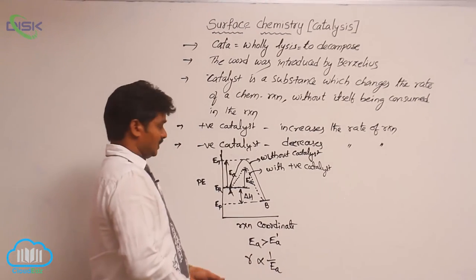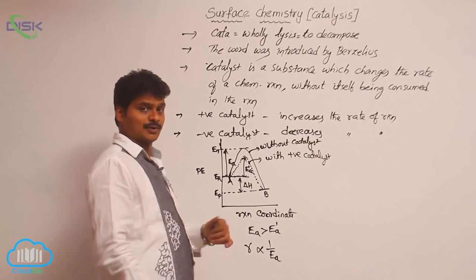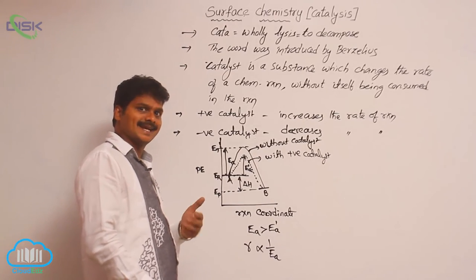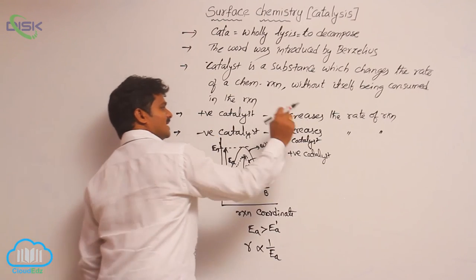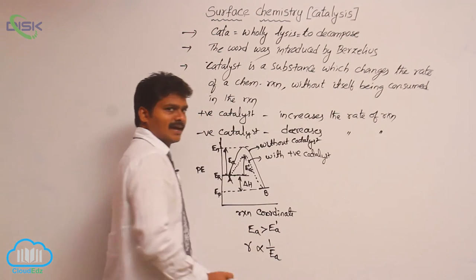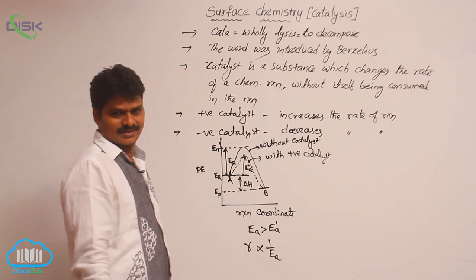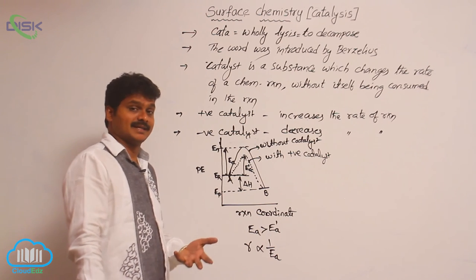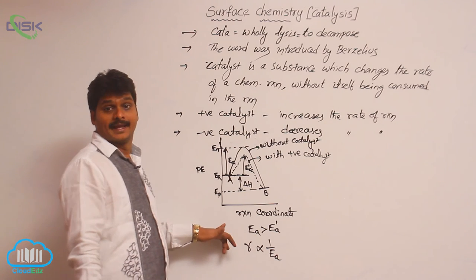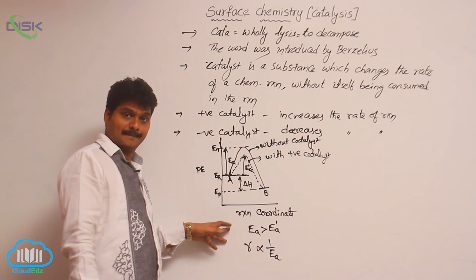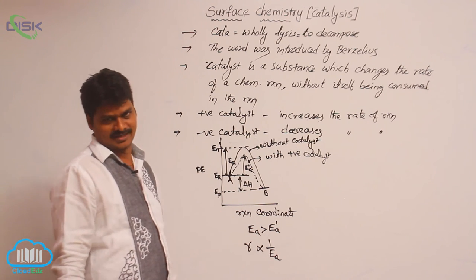With a positive catalyst, there is a decrease in activation energy, which leads to an increase in the rate of reaction. A positive catalyst increases the rate of reaction by setting a new path of lower activation energy.